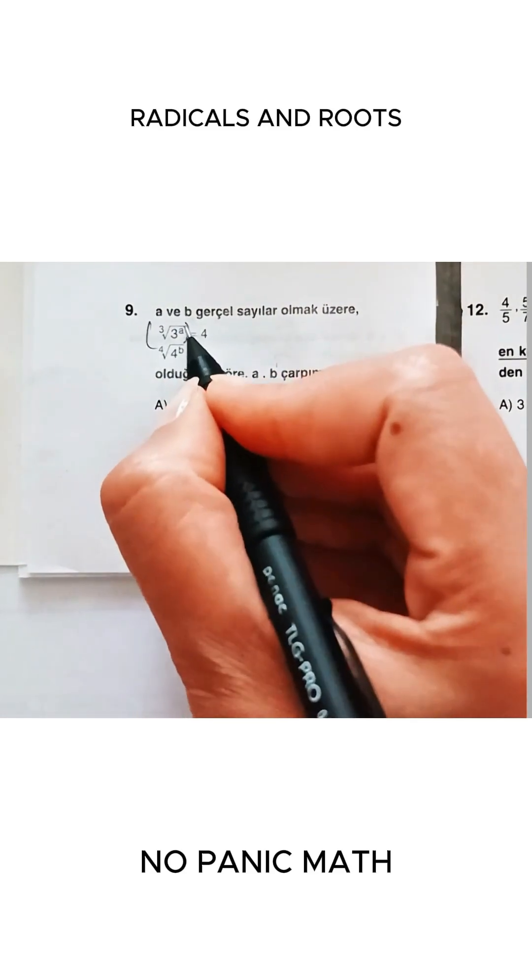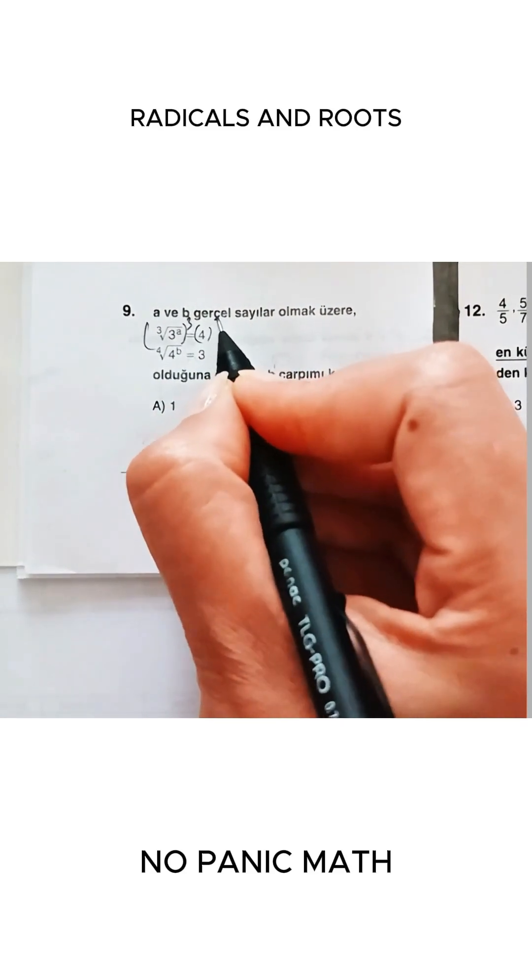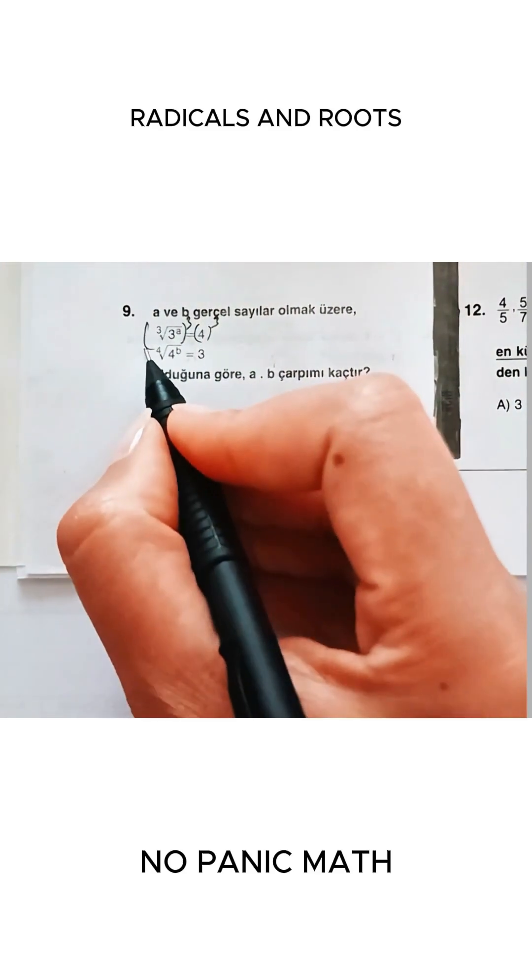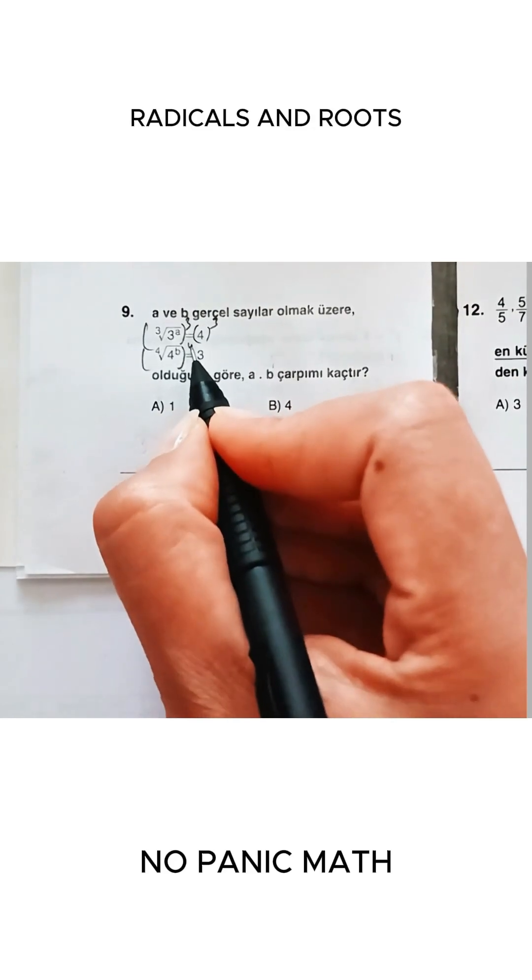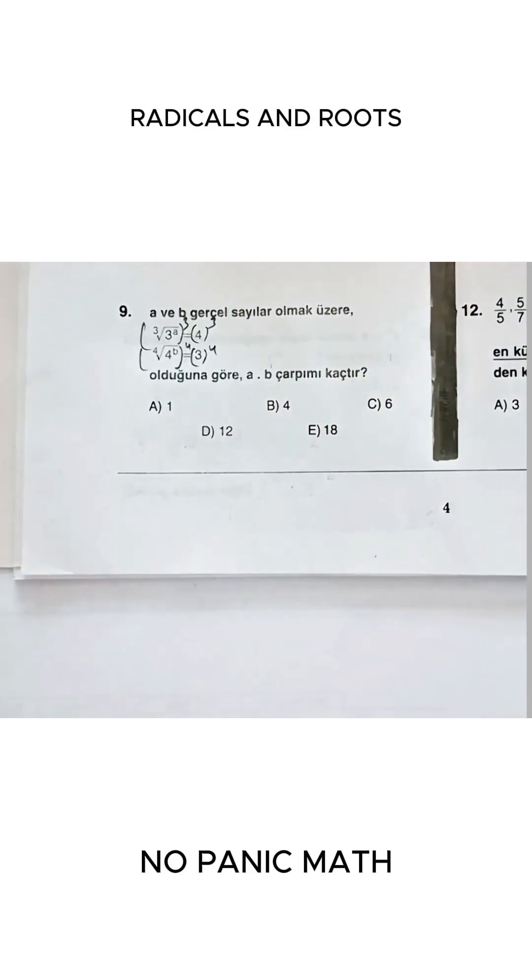Look, they've given us a cube root. So what do we do right away? We take the cube of both sides of the equation. When we look at the expression below, they've given us a fourth root. So we immediately raise it to the power of four.